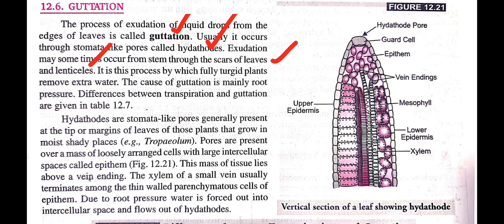This is a process by which fully turgid plants — turgid plant cells are cells of those plants that have a large amount of water in them, so they are full with water and exert pressure on their walls. Those turgid plants which have more water in them release extra water